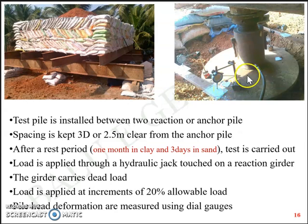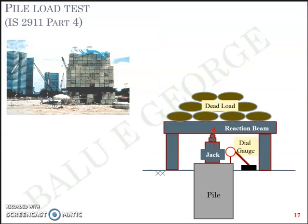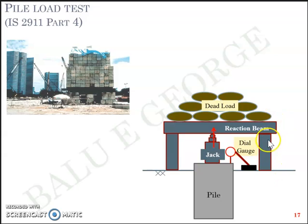These are the same dial gauges you may have used in your laboratories. The dial gauge system rests on a rigid reference beam, and pile head deformations are measured from the dial gauges in the millimeter range. As a schematic picture, I have represented the pile load test here: you have the pile, the hydraulic jack system above it, and the jack system gets its reaction from the reaction beam over which you have kept the dead load or kentledge system. Sections are used to anchor to the anchor piles, and this is the dial gauge system.